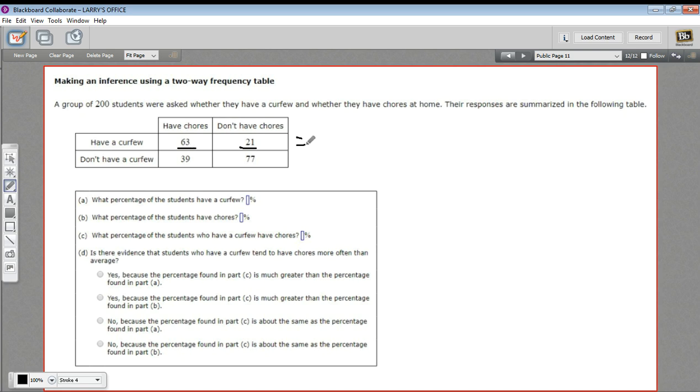63 plus 21, that equals 84. Now, to get a percentage, we have to divide that by the total. So 84 divided by the total of 200 students, and then we have to multiply that by 100 to get the percentage. I'm just going to pull out my calculator to do that. So 84 divided by 200, that's .42, and we multiply that by 100, we get 42%. So 42% of students have a curfew. I'm just going to put that right here, 42%.